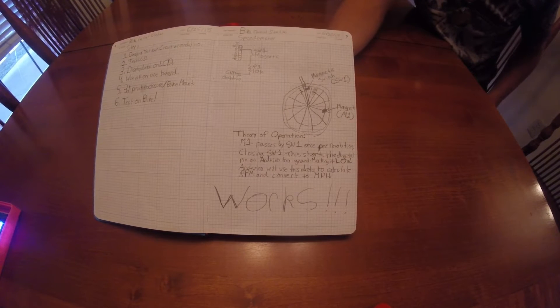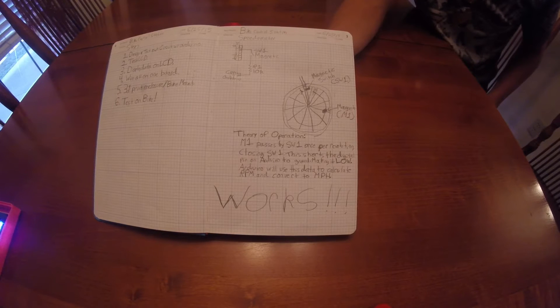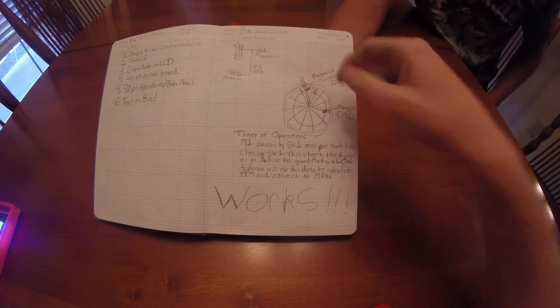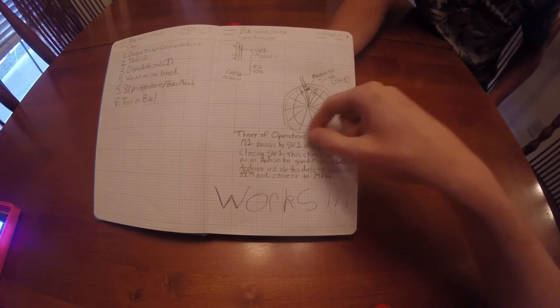Okay, so the first sensor I started working on was the speedometer. So what I did was I headed over to Instructables.com and I found an Instructable by a person named Amanda Gacy. And it used a reed switch, also known as a magnetic switch, attached to the frame of your bike and a magnet attached to the spokes of your bike.